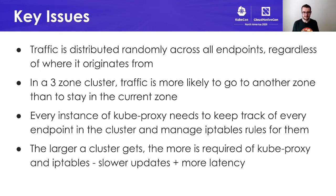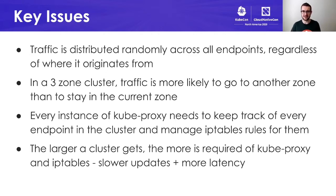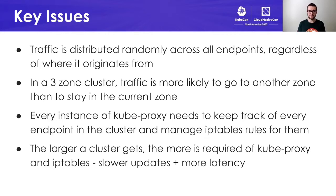Now, this works, but it does come along with some issues. Traffic is distributed randomly across all endpoints, regardless of where it actually originates from. So in a three zone cluster, traffic is more likely to go to another zone than to stay in the zone it actually originated from. And every instance of kube-proxy needs to keep track of every single endpoint in your cluster, which means the larger a cluster gets, the more endpoints every instance of kube-proxy has to manage, which results in slower updates and even sometimes more latency.